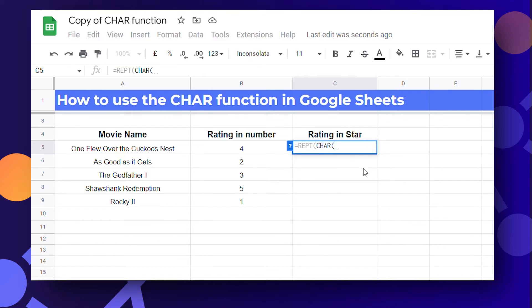So write char and the unicode number. Then you have to specify the number of times to be repeated. So select this cell and like that you can create your rating chart.